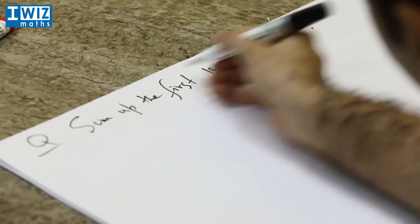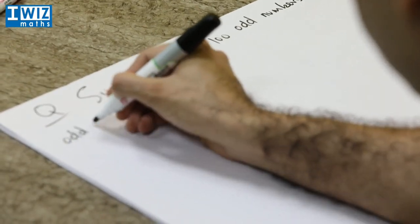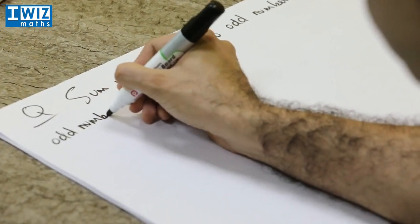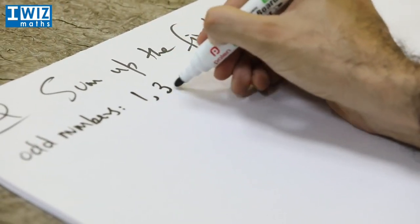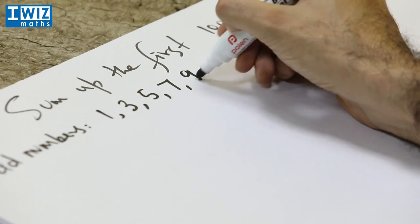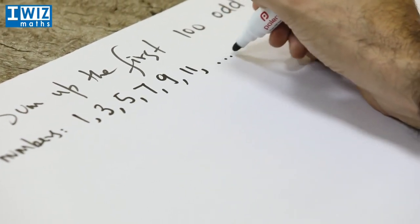So let's first remind ourselves what odd numbers are. Odd numbers are numbers of the form 1, 3, 5, 7, 9, 11, etc.